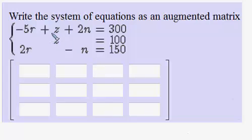In this problem we're given a system of three equations with three unknowns. We are to take the system of equations and form what's called an augmented matrix.